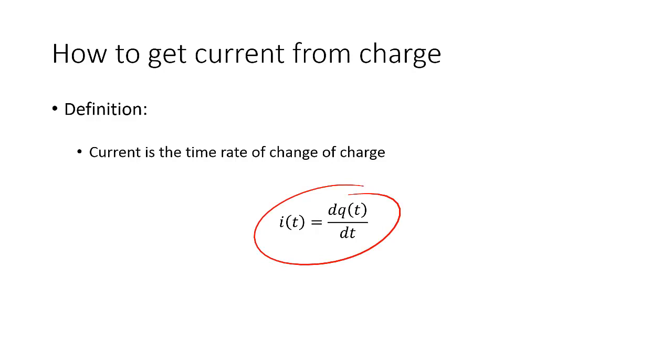Notice that it is a derivative. So i of t, which is a common variable used for current, equals to dq by dt.